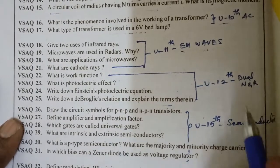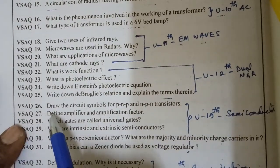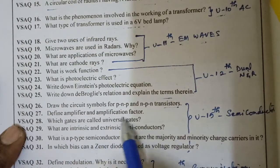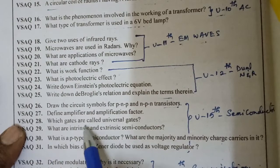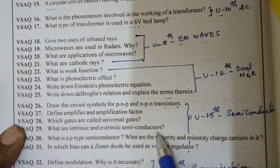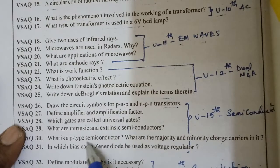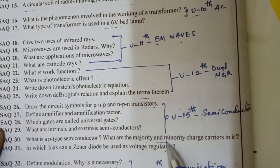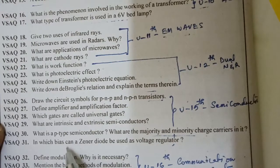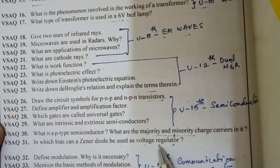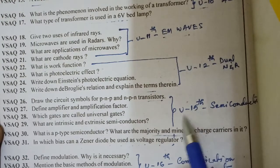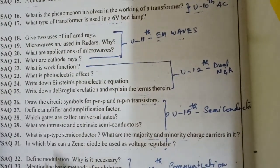Twenty-sixth question: draw the circuit symbols of PNP and NPN transistors. Twenty-seventh: define amplifier and amplification factor. Twenty-eighth: which gates are called universal gates? Twenty-ninth: what are intrinsic and extrinsic semiconductors? Thirtieth: what is a P-type semiconductor and what are the majority and minority charge carriers in it? Thirty-first: in which bias can a Zener diode be used as a voltage regulator? These belong to chapter 15, semiconductors.